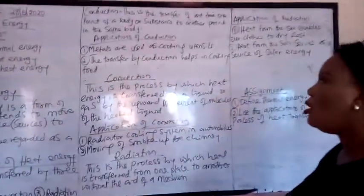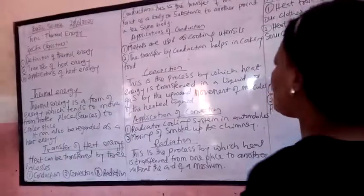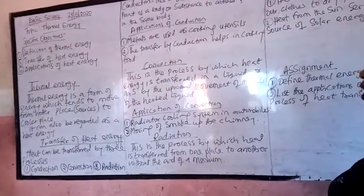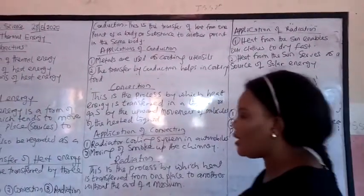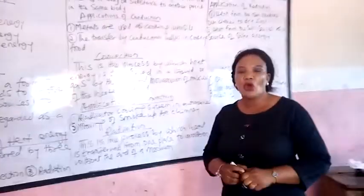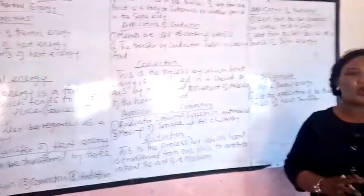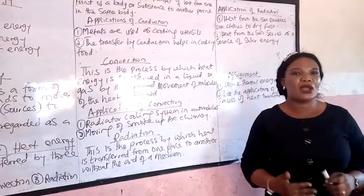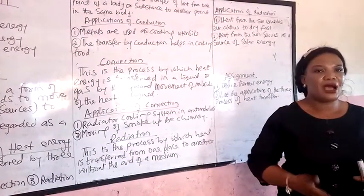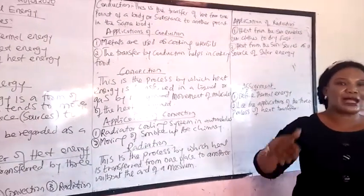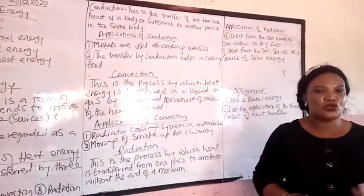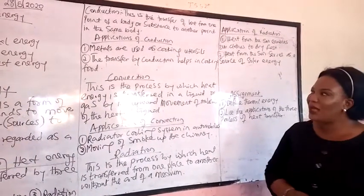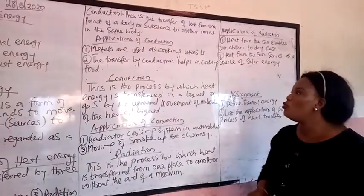Convection is the process by which heat energy is transferred in a liquid or gas by the upward movement of molecules of the heated material. For example, when you put water in a pot, you will notice that the water starts boiling from the bottom upward — it will start boiling from down to up until it reaches every part of the container.